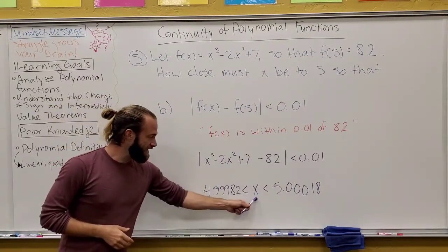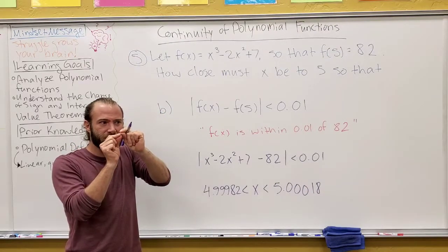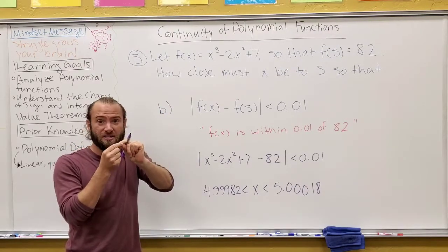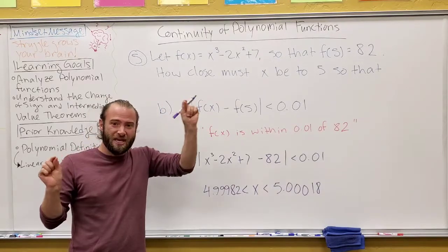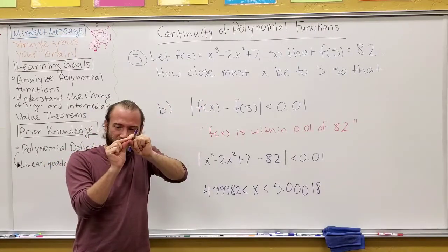A number line is super helpful. But remember, you can be 8 away this direction, or you could be 8 away this direction, which gives me two possible solutions. If I go 3 plus 8, I get 11, and if I go back 8, I get negative 5.